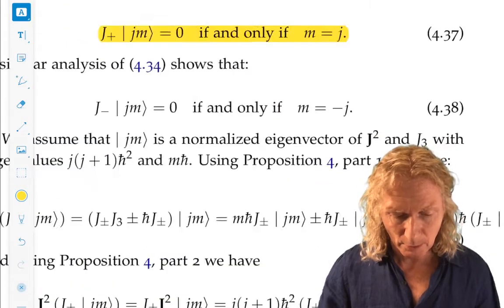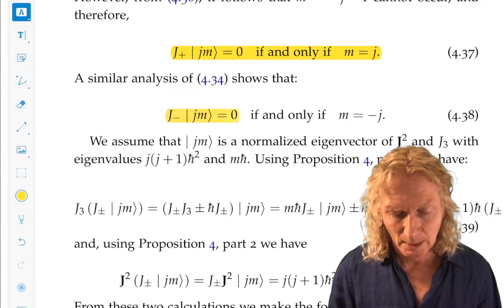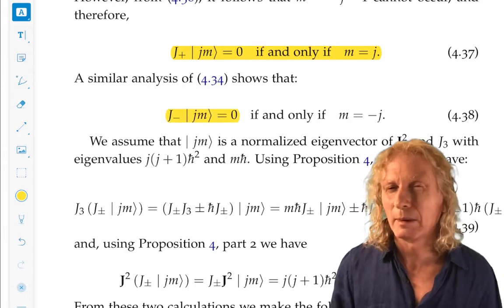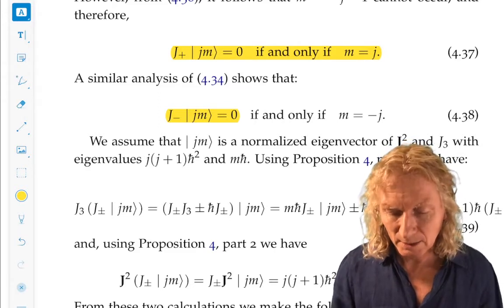Going to the other end, you can similarly prove that J minus J, M acting on M, and you should be able to guess what the answer is. If and only if M equals minus J. That's the lower bound.